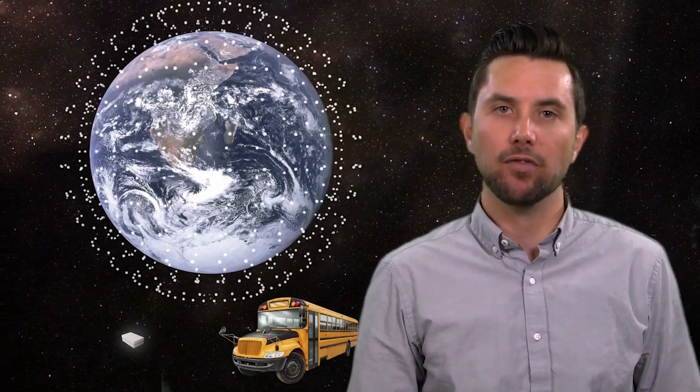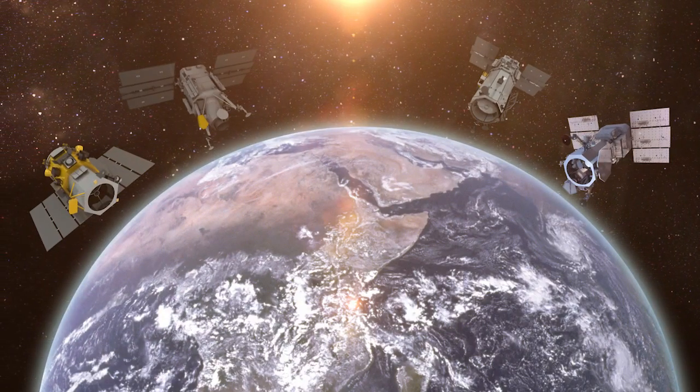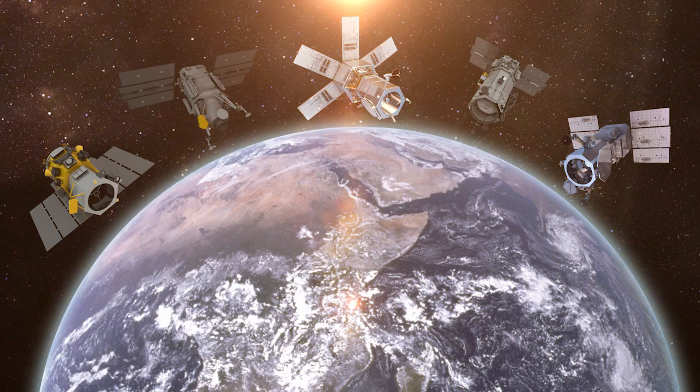Many of those satellites were launched to provide that bird's eye perspective Socrates was in search of. At Digital Globe, we have four active satellites in orbit, with a fifth planned to launch in the fall of 2016.